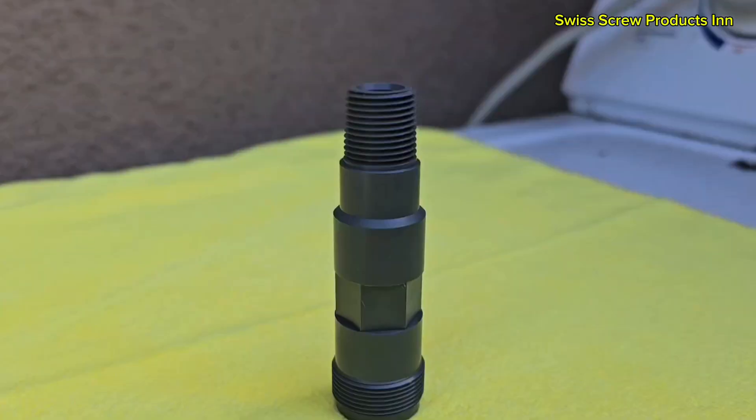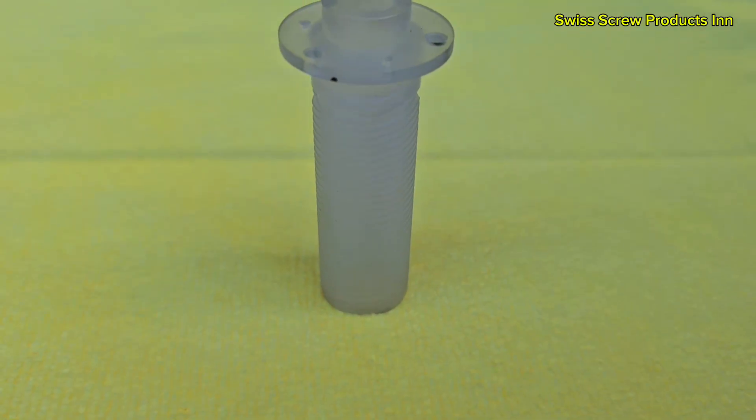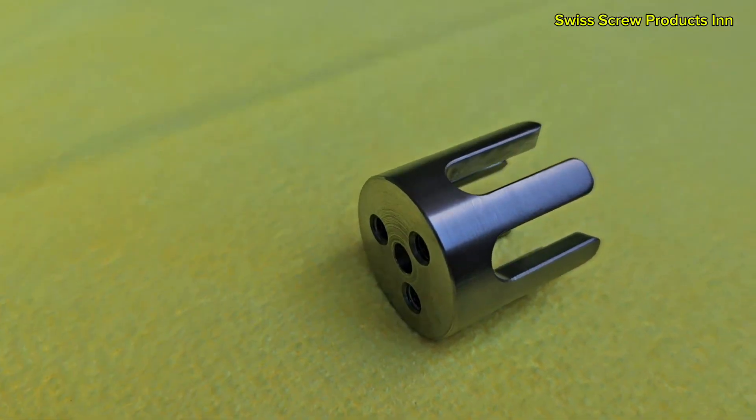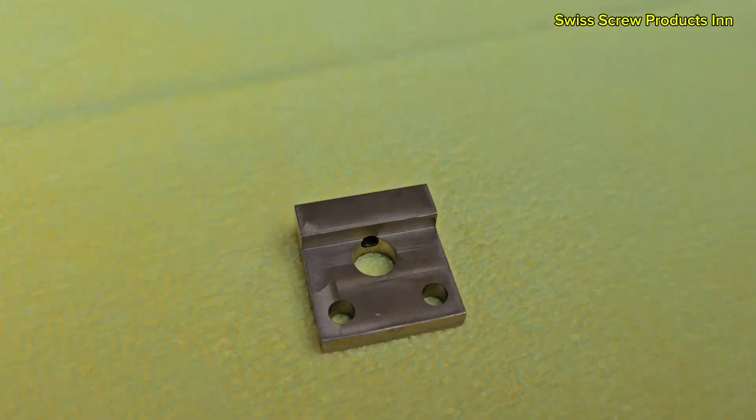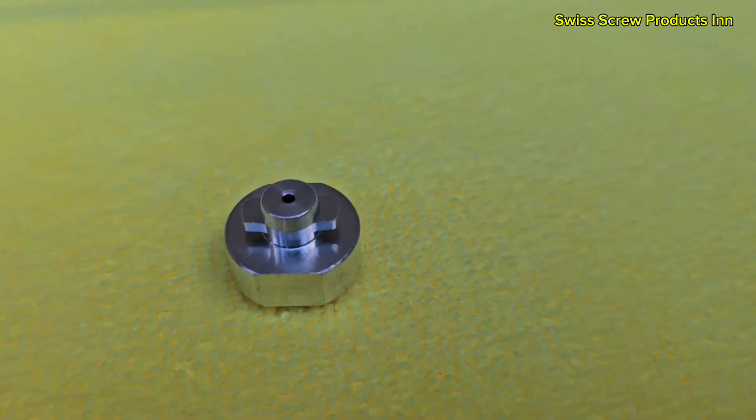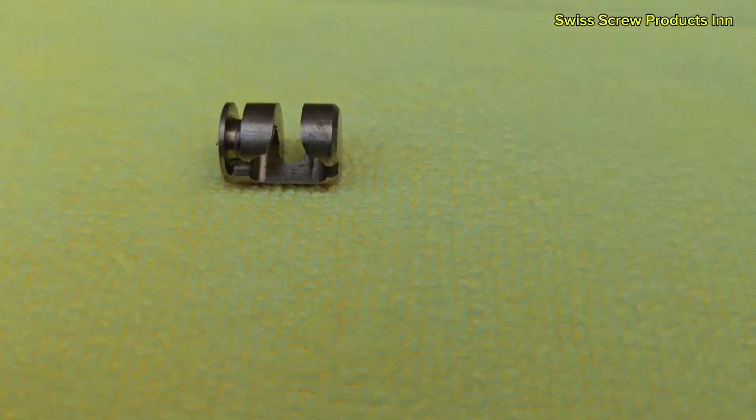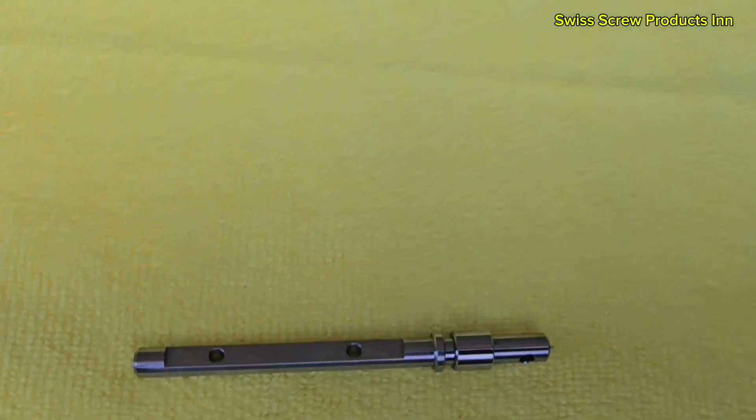In medical devices, Swiss machines are used to produce bone screws, orthopedic pins, and surgical implants. These parts are often implanted inside the human body, meaning they must meet exact tolerances and be made from biocompatible materials like titanium or stainless steel.